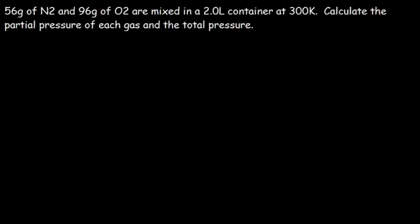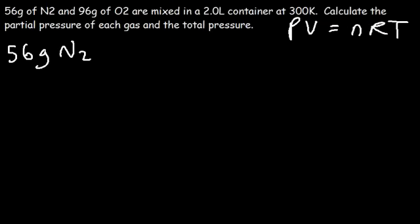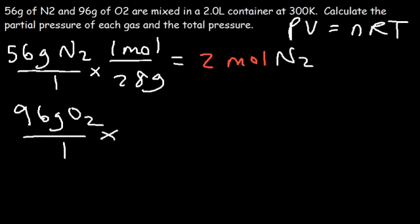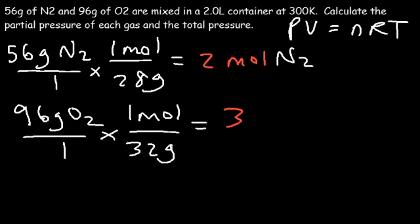Let's try another problem. We have the mass of N2 and O2 mixed in a 2-liter container at 300 Kelvin. We'll find the partial pressure of each gas using the ideal gas law. We need to calculate moles first. For 56 grams of N2, the molar mass is 28 grams per mole, so 56 divided by 28 is 2 moles of nitrogen. For O2, the molar mass is 32 grams per mole, and 96 divided by 32 is 3 moles of oxygen.